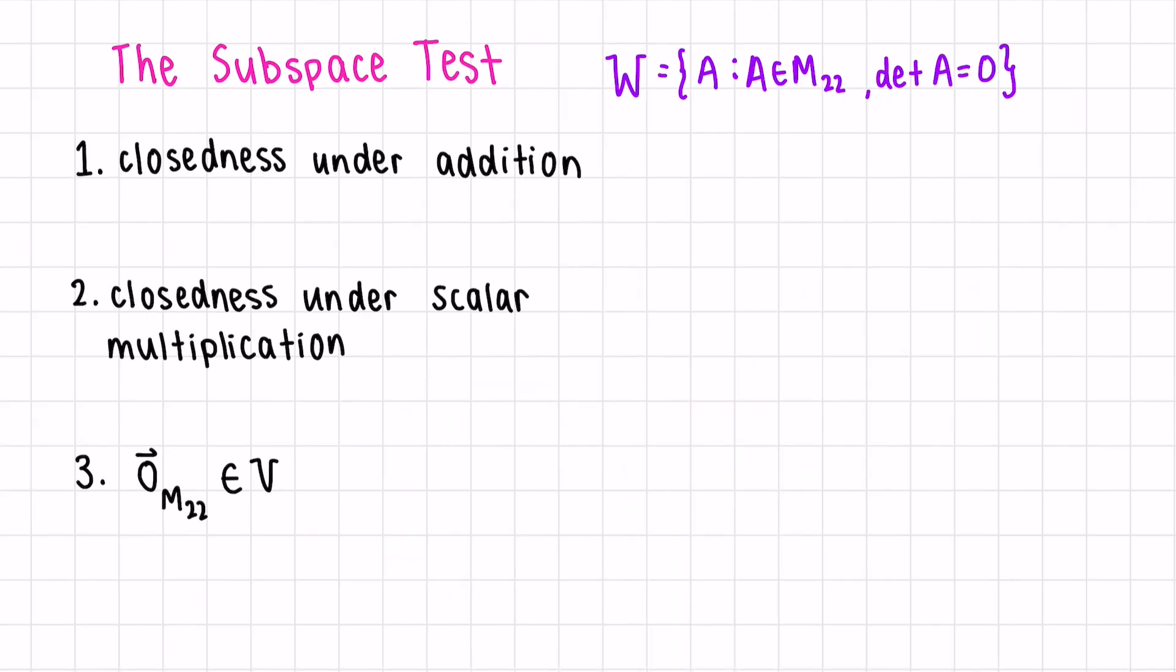Now let's check if W is a vector space. W is a subset of M22, so we can use the subspace test and only focus in on these three conditions. So the determinant of a matrix, let's call it ABCD, is AD minus BC. How could we get 0?